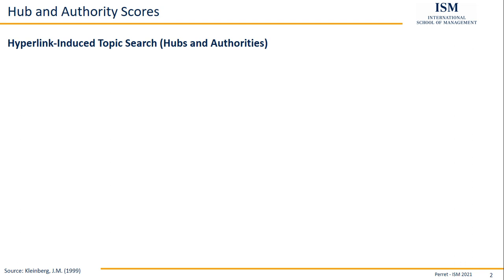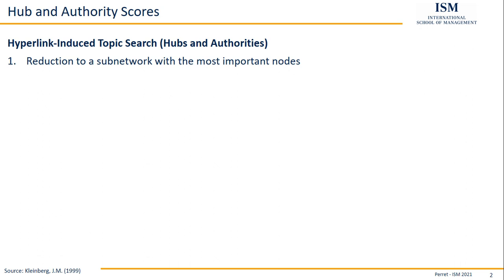The procedure is relatively simple, at least from the basic outline. It starts slightly differently — not necessarily using the fully available network data. Here we usually start with the idea of just using a subnetwork with the most important nodes. This means beforehand you would have to use some other measure to decide which are the most important nodes in your network.